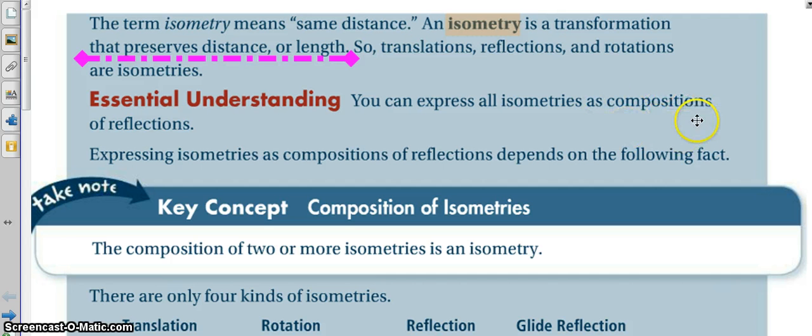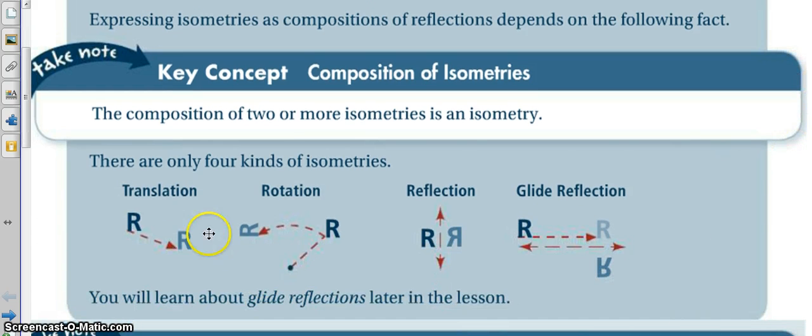Now, that is because a rotation can really be looked at as multiple reflections. So, then if we look here, we've got translation, rotation, reflection, or a glide and then a reflection, which is really like a translation and then a reflection.